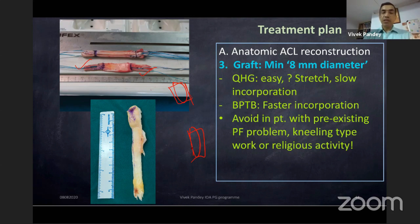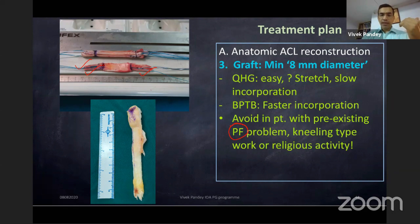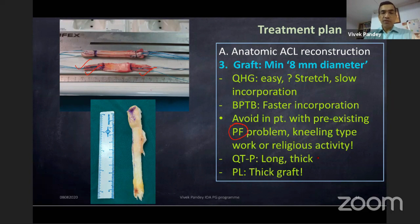If the patient's religious activity requires frequent kneeling — for example, five prayer times daily — discuss with them that BTB may cause some knee pain, and you would possibly do the quadrupled hamstring graft. Quadrupled hamstring can stretch a bit and has slower tunnel incorporation; BTB stretches less but has the patellar morbidity concern. The other grafts (quadriceps tendon, peroneus longus) are emerging options.